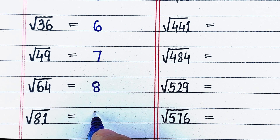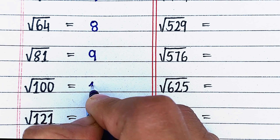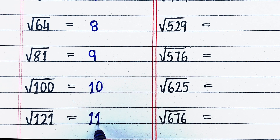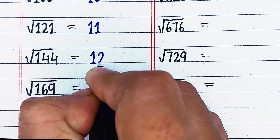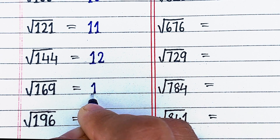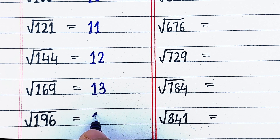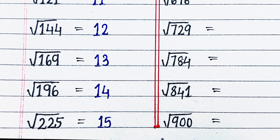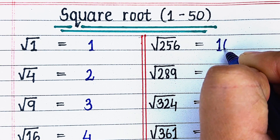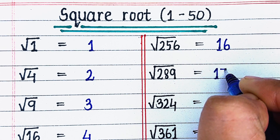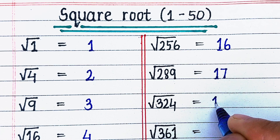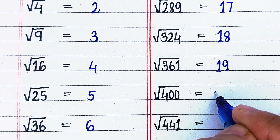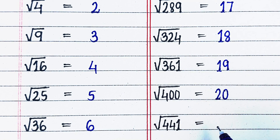Square root of 81 is 9. Square root of 100 is 10. Square root of 121 is 11. Square root of 144 is 12. Square root of 169 is 13. Square root of 196 is 14. Square root of 225 is 15. Square root of 256 is 16. Square root of 289 is 17. Square root of 324 is 18. Square root of 361 is 19. Square root of 400 is 20.